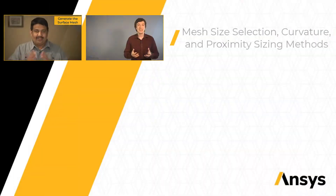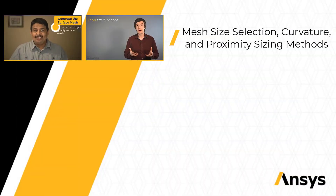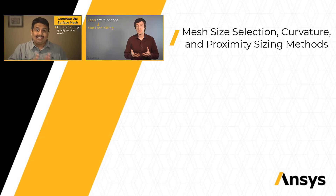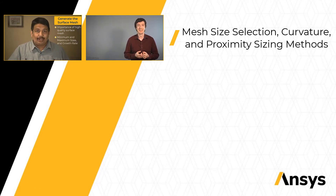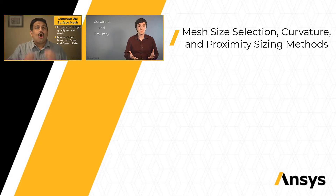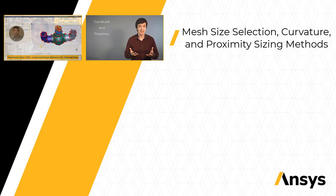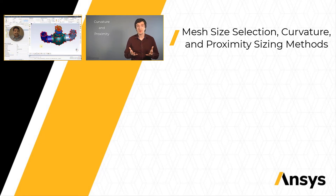First we will start with a discussion on the minimum and maximum sizes and the growth rate and how to pick their appropriate values. We will then move on to learning about curvature and proximity global sizing techniques and discuss and differentiate their impact on the surface mesh compared to the curvature and proximity local sizing methods.